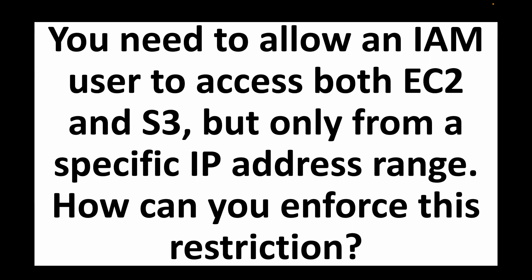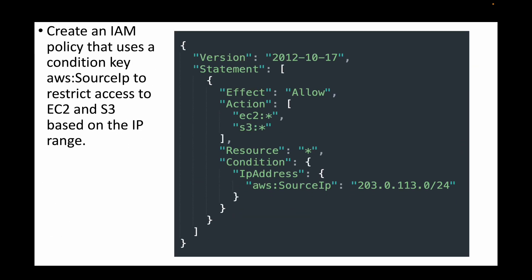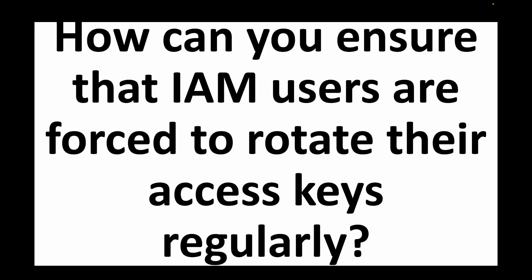The next question is: you need to allow an IAM user to access both EC2 and S3 services but only from a specific IP address range — how can you enforce this restriction? For this we create an IAM policy using the condition key to specify the allowed IP address. We allow all actions on EC2 and all actions on S3, but the condition restricts requests to a specific IP address. Only requests from that IP address are permitted.